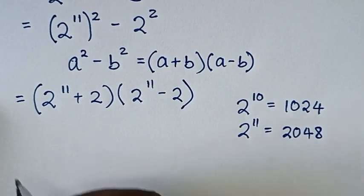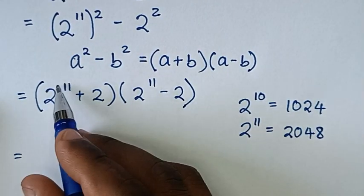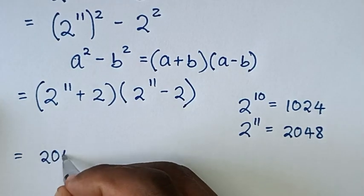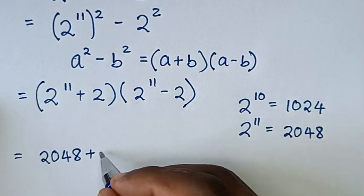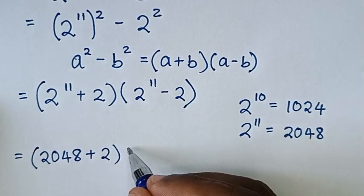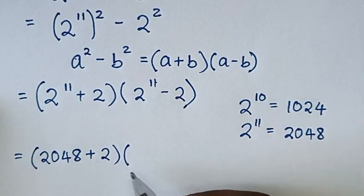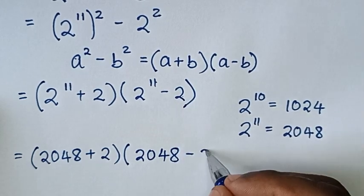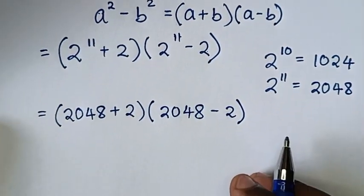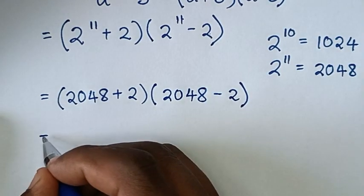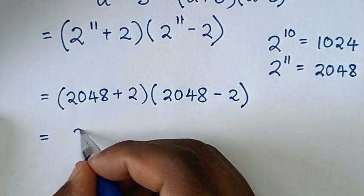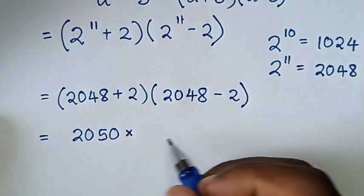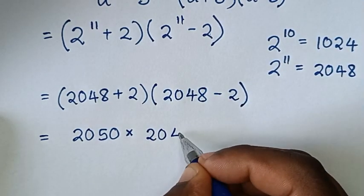Then it will be equal to: 2 power of 11 plus 2 gives us 2050, and 2 power of 11 minus 2 gives us 2046.